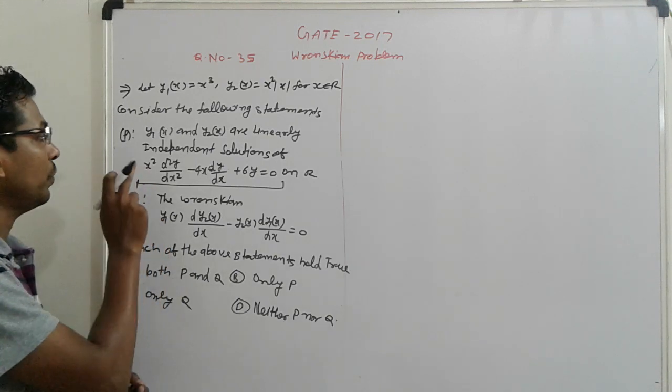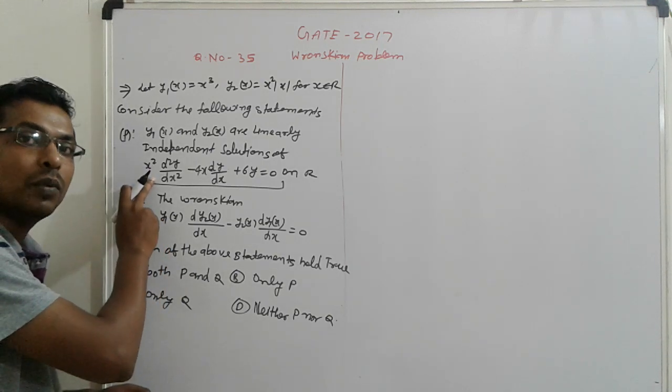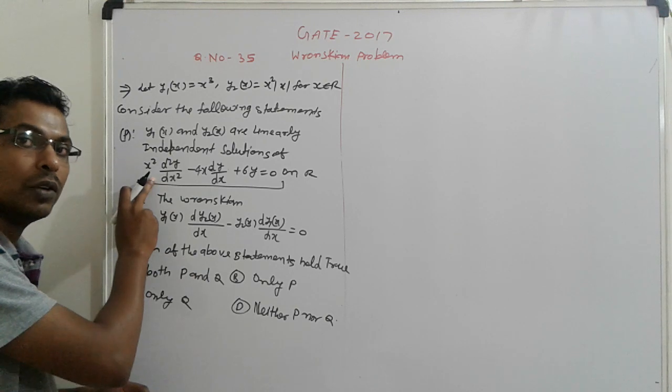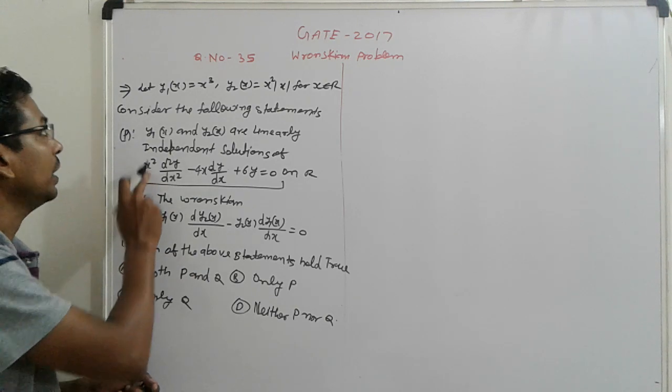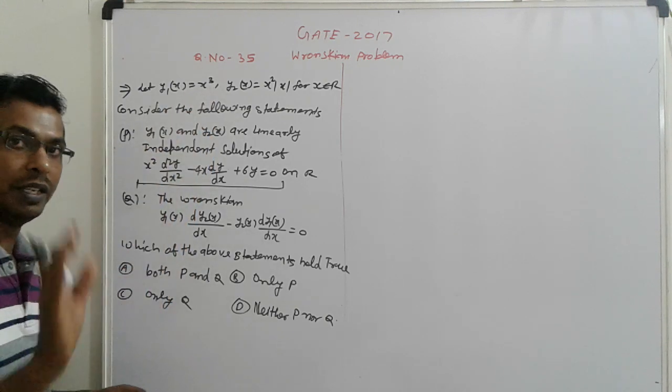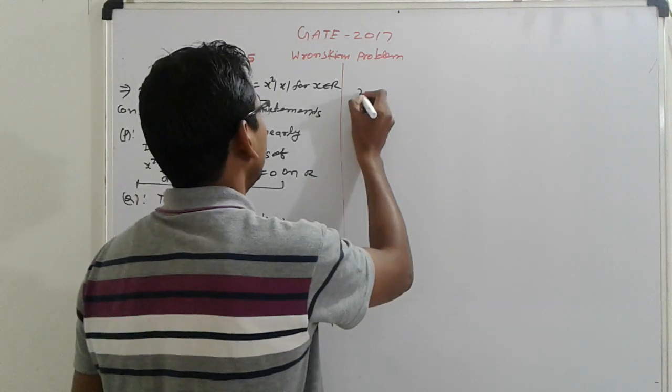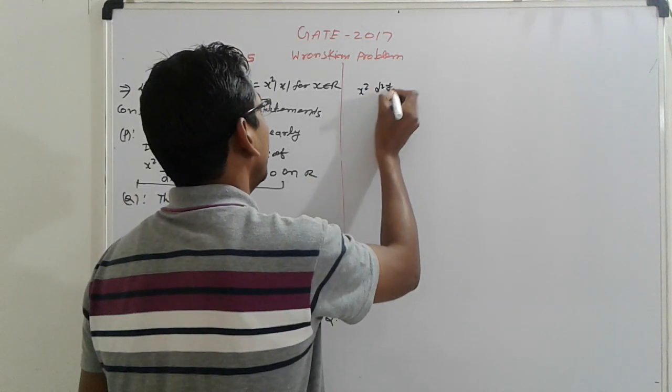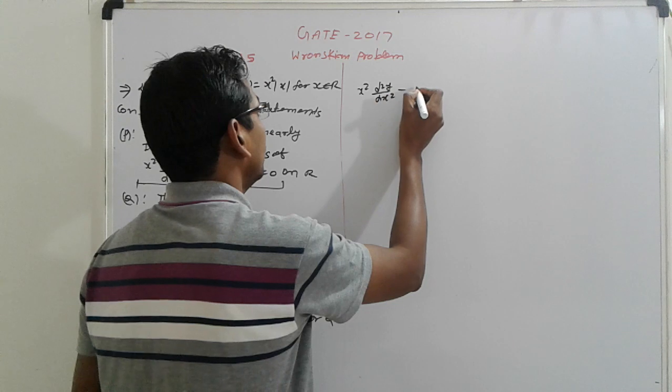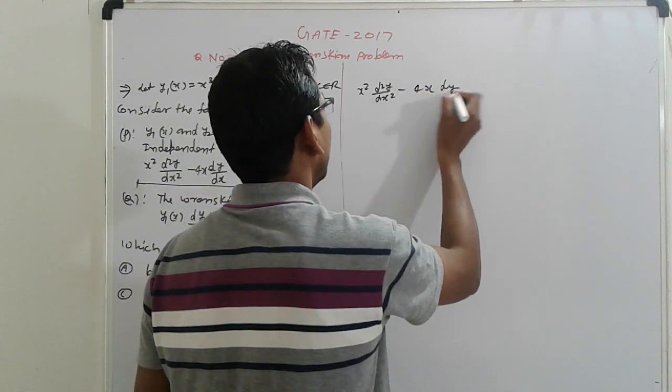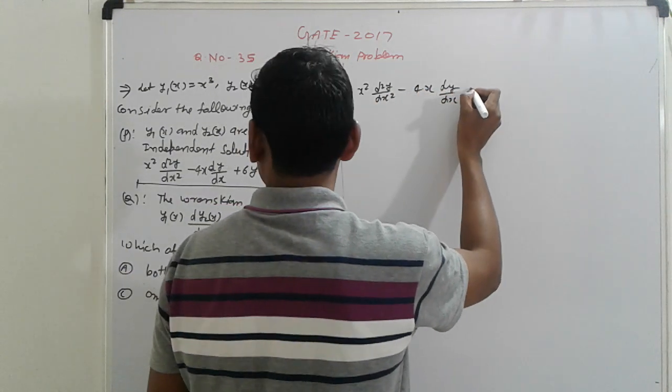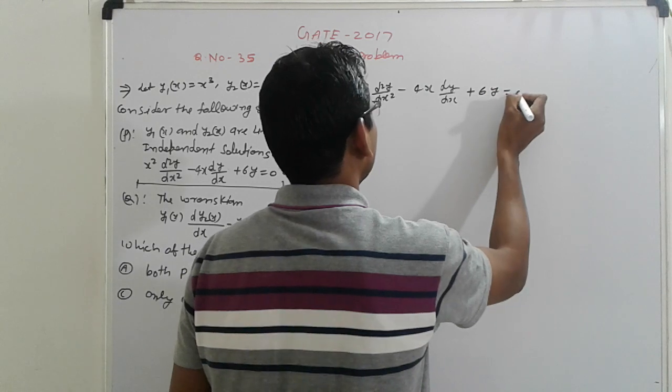Linearly independent proof means find out the Wronskian if not equal to 0. If not equal to 0, then linearly independent. So that is the method. First you find out if Y1 and Y2(X) are equal or not. Here and here, both are same or not with checkers.